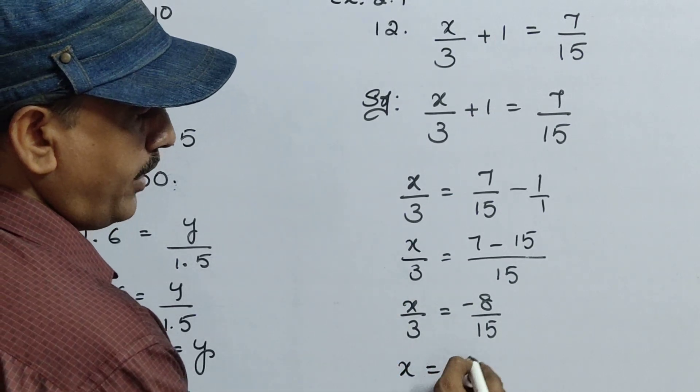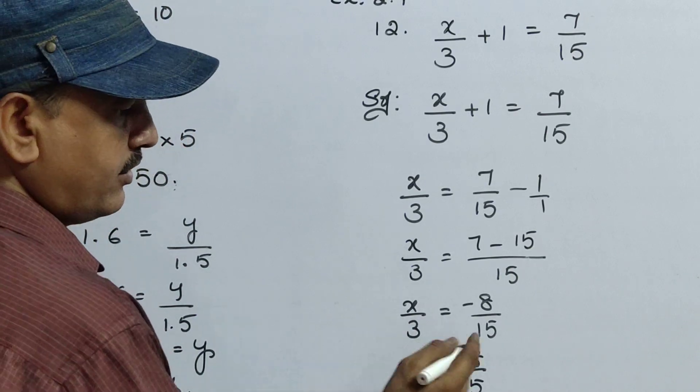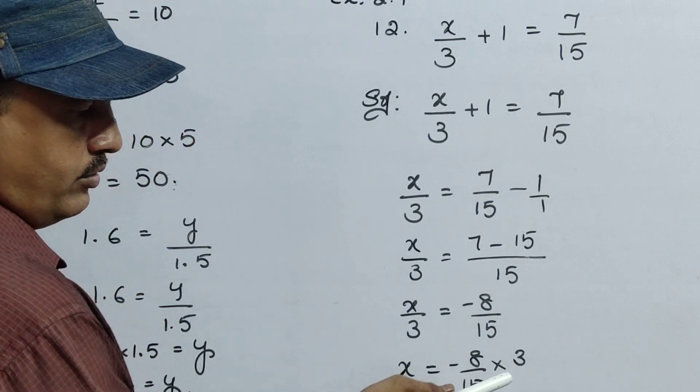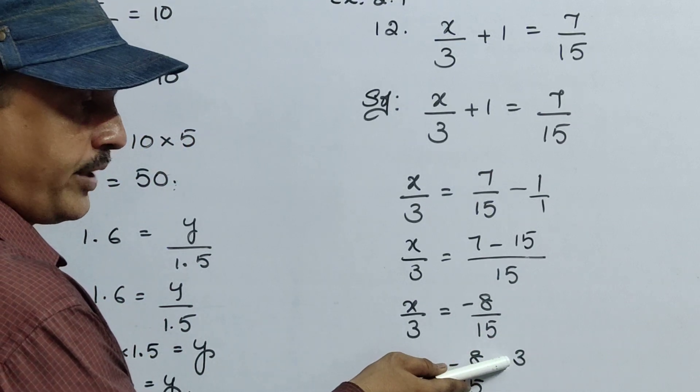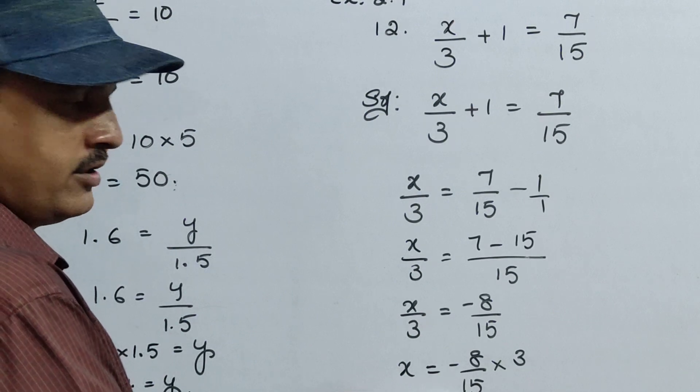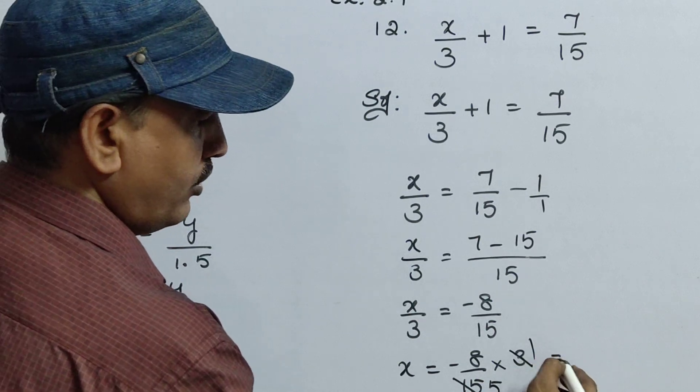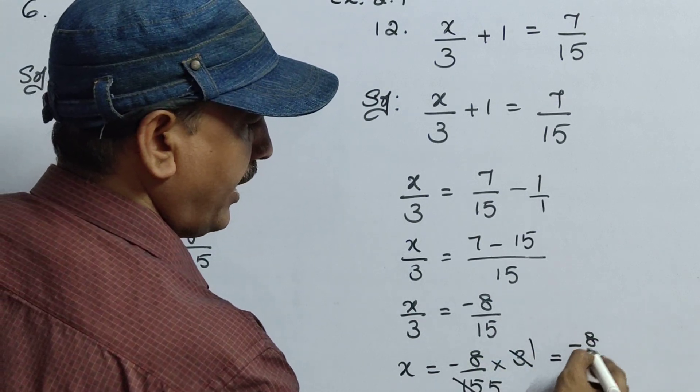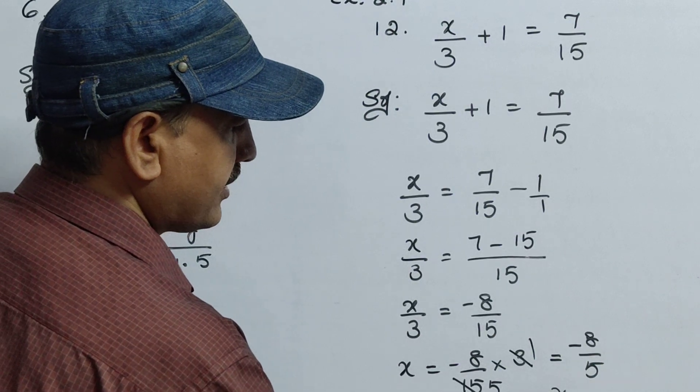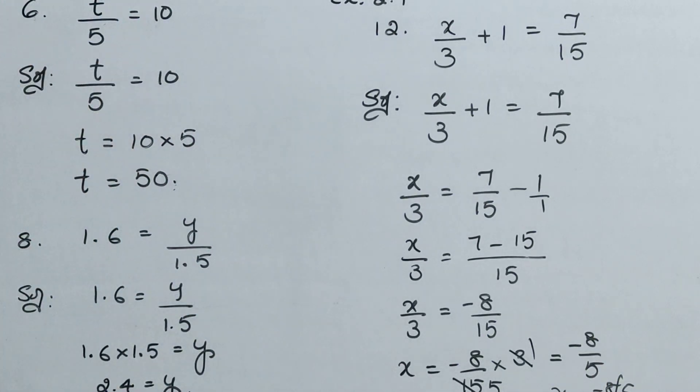Now x equals to minus 8 by 15. This is division, so it will go that side into 3. Now this becomes a numerator. So this numerator and denominator, any possible chance of cancellation you can do it. So 3 ones, 3 fives. So minus 8 by 5 is the answer. Therefore x equals to minus 8 by 5 is the solution.